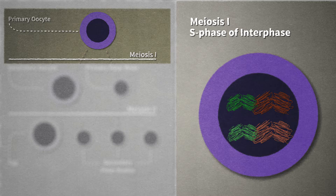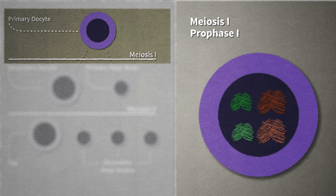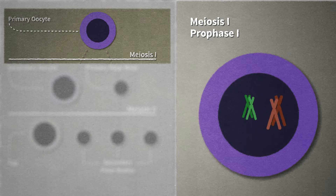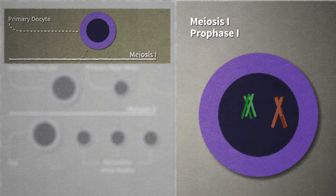During prophase I of meiosis I, the chromosomes condense, become visible, and homologous chromosomes are paired up in synapsis. Crossing over occurs as non-sister chromatids on homologous chromosomes exchange genetic information. With crossing over, a chromosome is no longer fully maternal or fully paternal, but rather a mixture of maternal and paternal alleles.